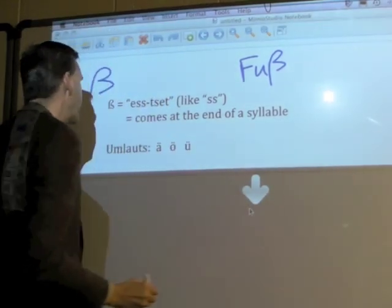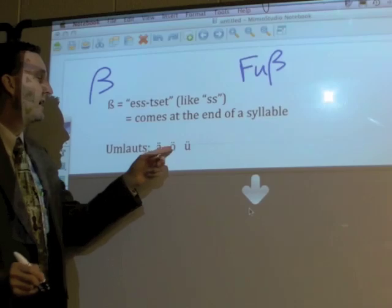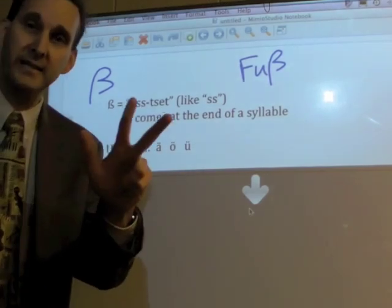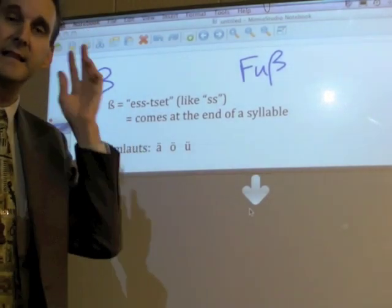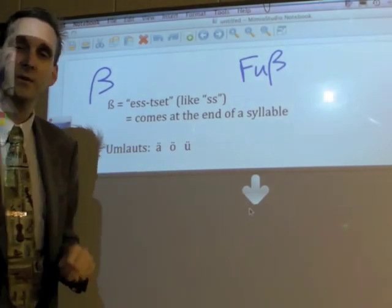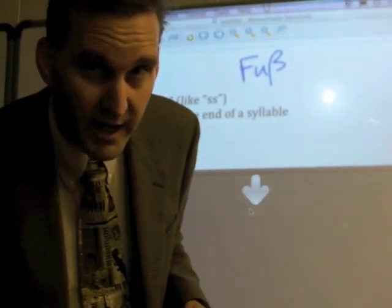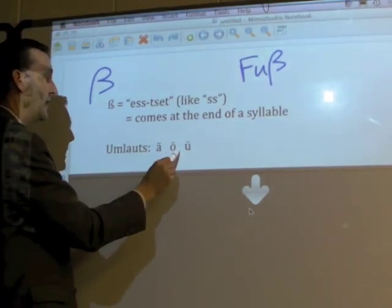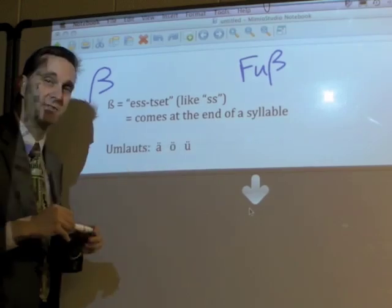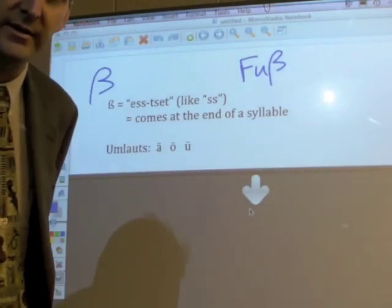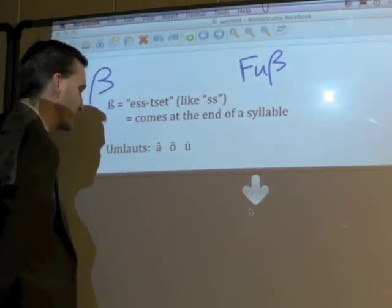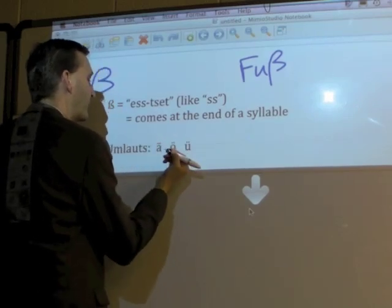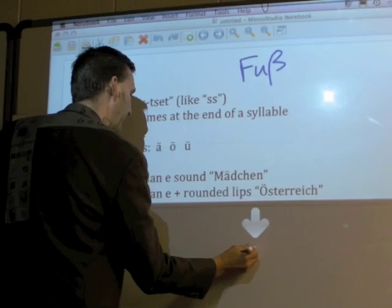The next ones are the two dots over certain letters — called Umlauts. There are only three letters in the German alphabet that can take the two dots. I'm going to be asking this on a test. Three letters: A, O, and U can take the two dots over those vowels. No other vowels can in German, with rare exceptions. So: A-umlaut, O-umlaut, and U-umlaut.